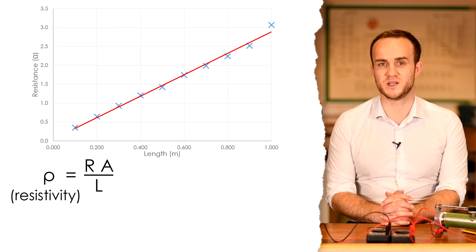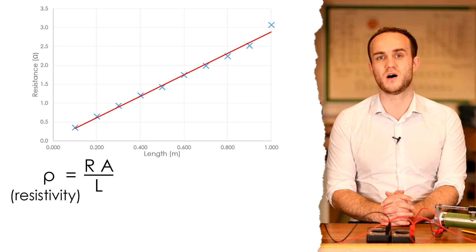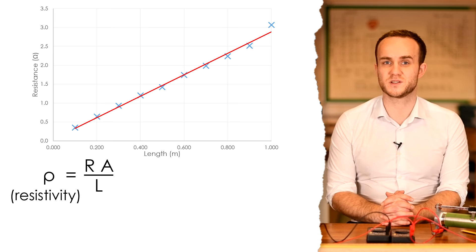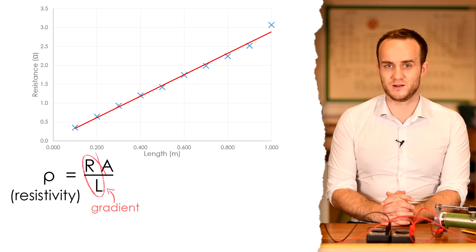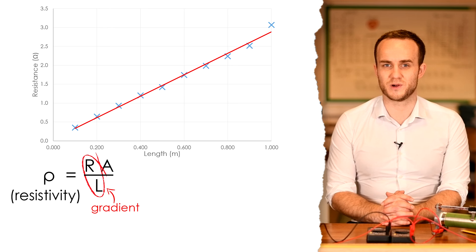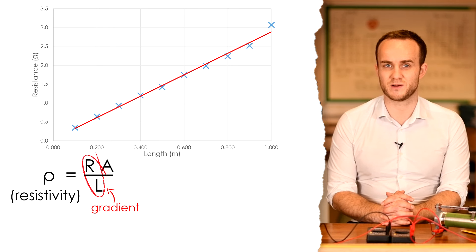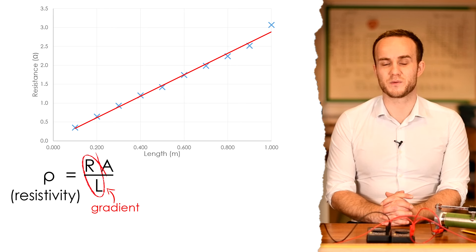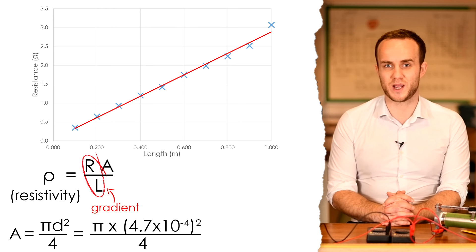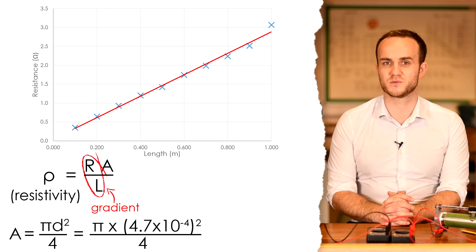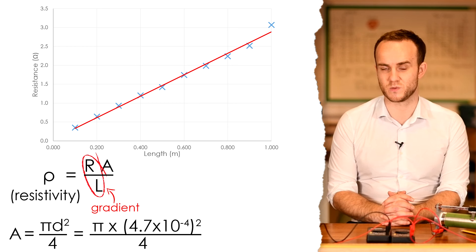Now the equation for resistivity is rho, resistivity, equals R A over L. Resistance times cross-sectional area divided by length. Now R over L is equal to the gradient of our graph. So all we have to do is replace that with our 2.84 and then times that by the cross-sectional area. How do we calculate cross-sectional area? Pi R squared, but because we've got the diameter we're going to use pi D squared over 4. Same thing.